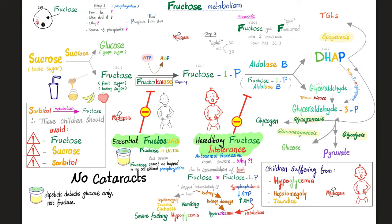To summarize normal fructose metabolism: Step one — fructose is phosphorylated by fructokinase to fructose-1-phosphate, trapping it inside the cell. Step two — fructose-1-phosphate is cleaved into two three-carbon molecules by aldolase B. Now, are you ready for the abnormal conditions?